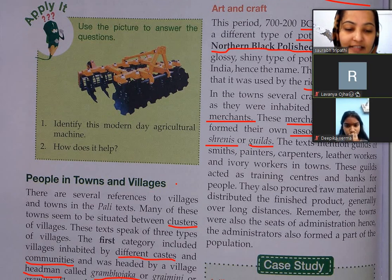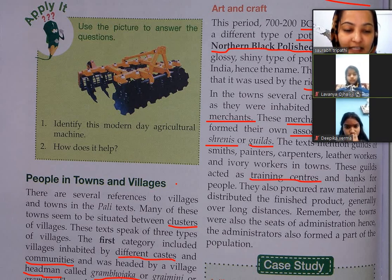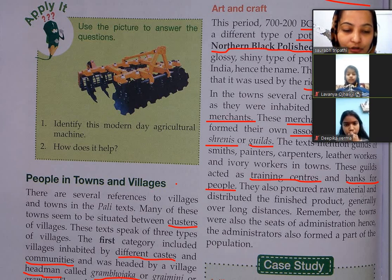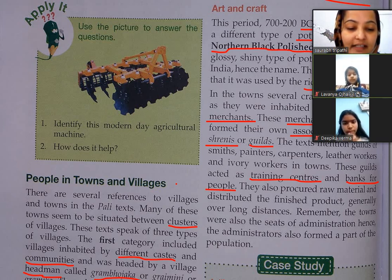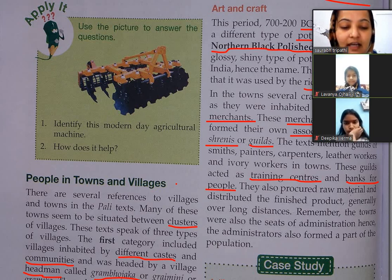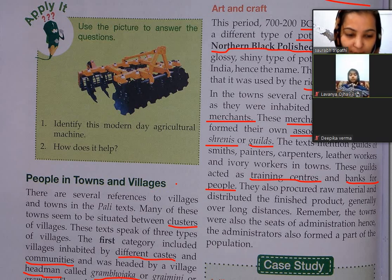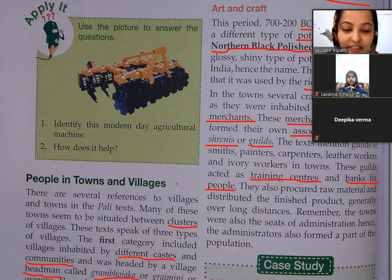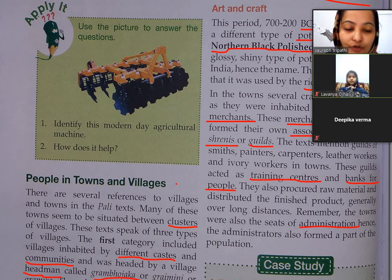These guilds acted as training centers — logon ko craft banane ke liye train karte the — and also as banks for people. They also procured raw material and distributed finished products over long distances. Towns were also the seats of administration, and administrators also formed a part of the population.